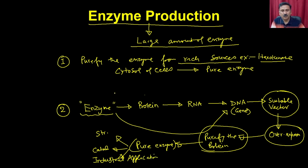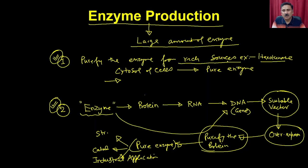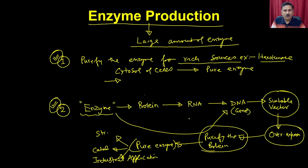A clear understanding is needed when choosing between the two approaches. The drawback of approach 1 is that you have to identify a rich source, purify the protein using traditional chromatography, and even then production is very limited because it depends on the amount of enzyme present in that rich source. In approach 2, once you identify the gene you can overexpress it in large quantities.